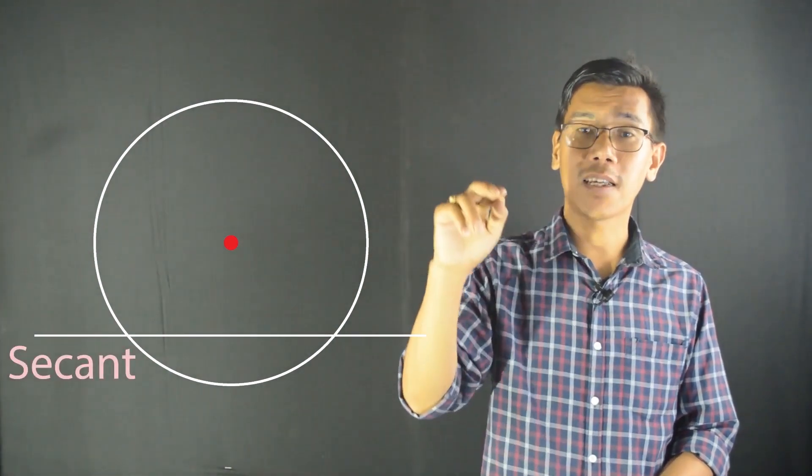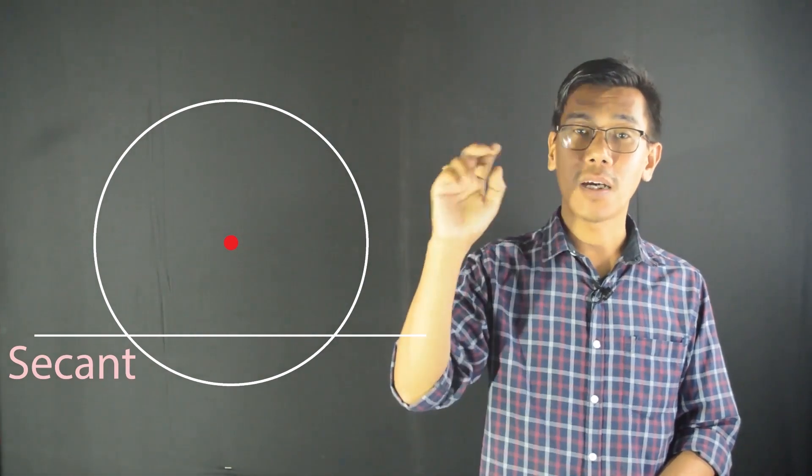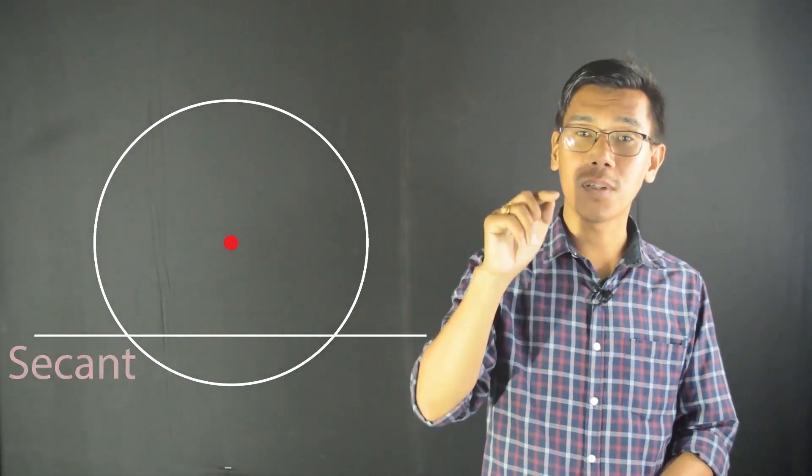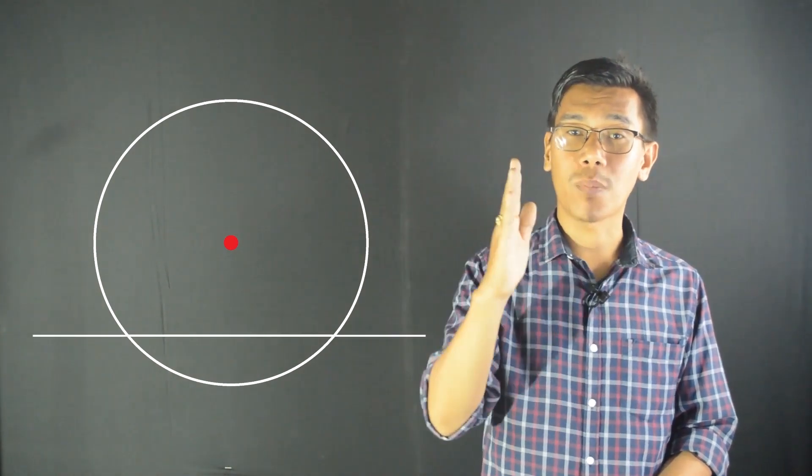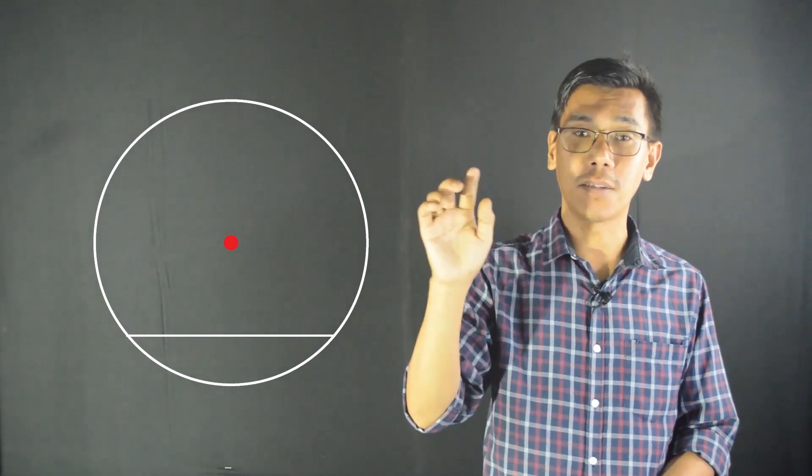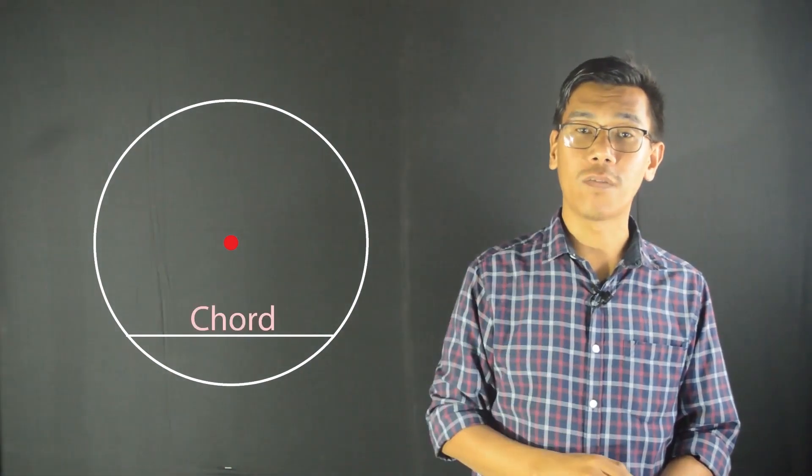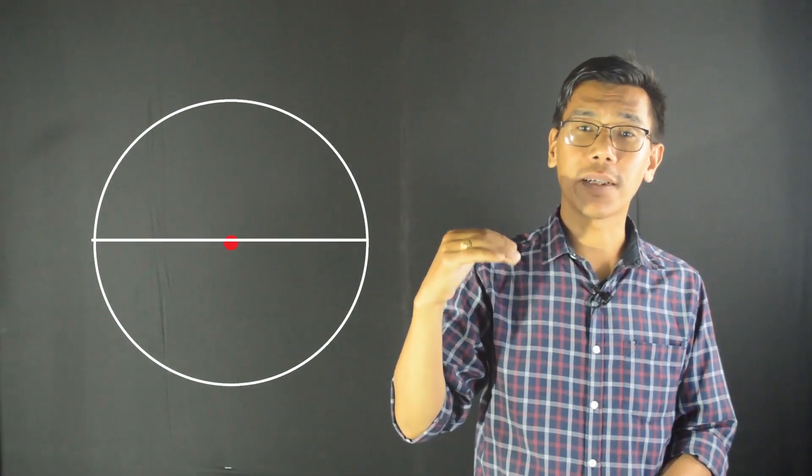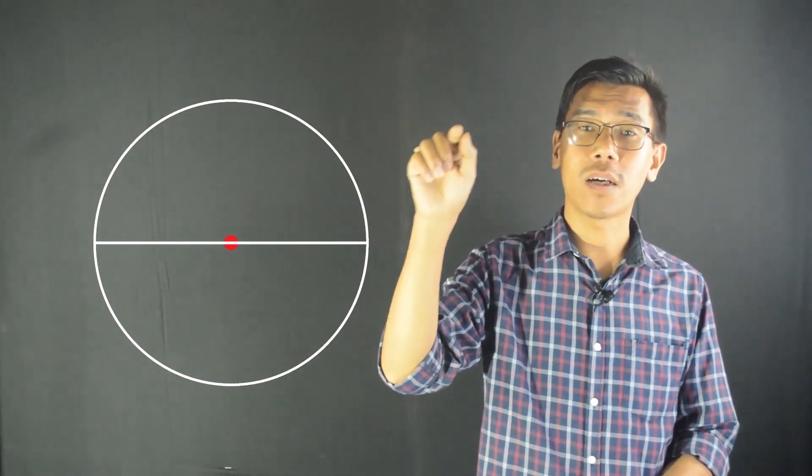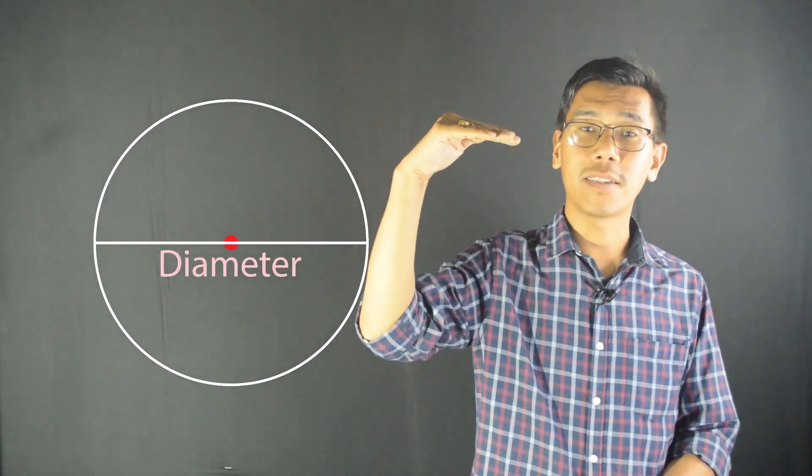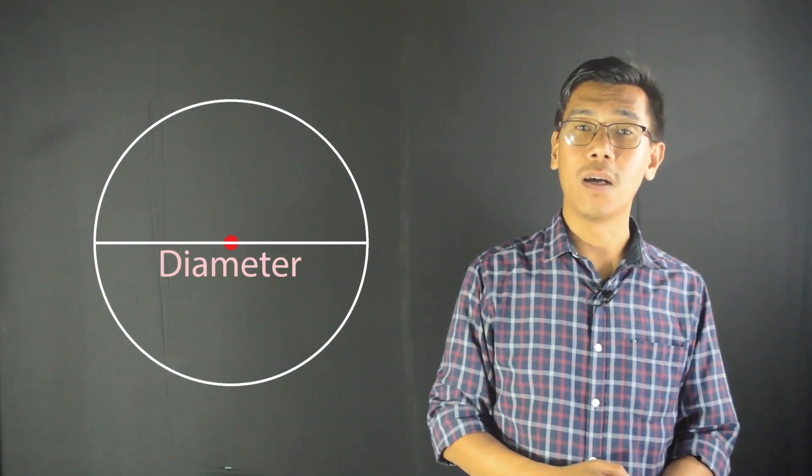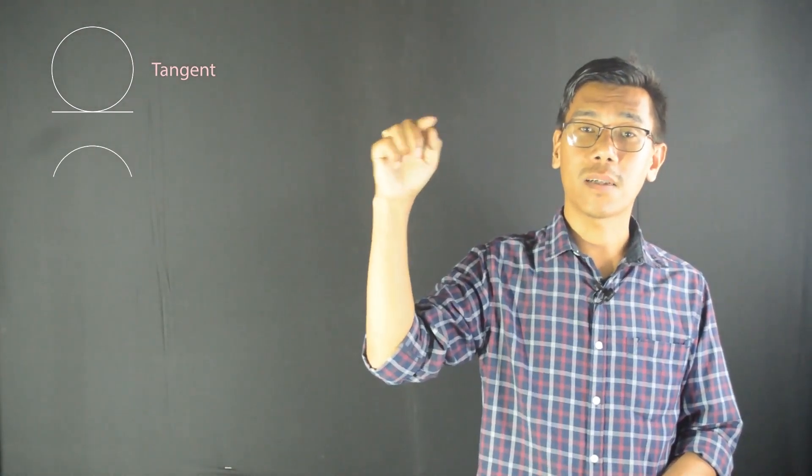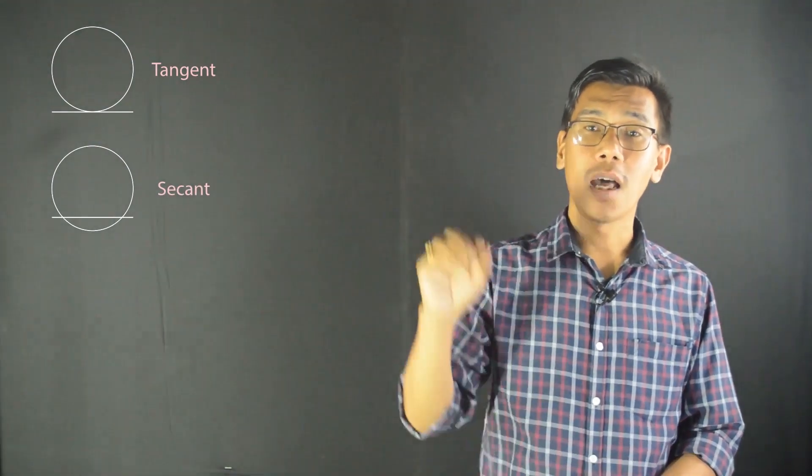If we have a secant, the second part of the secant is a chord. The chord is a line inside the circle. Second chord, then lines are chords.